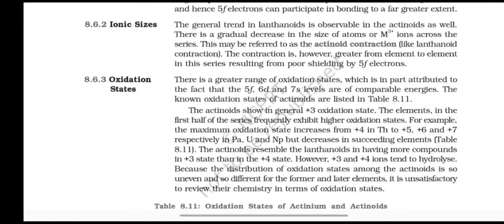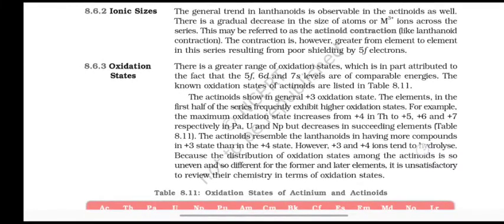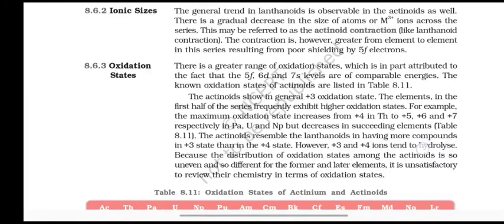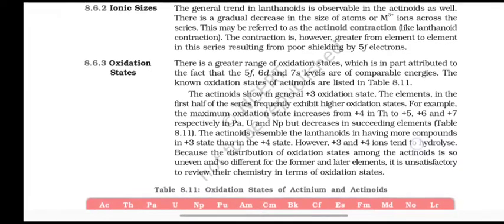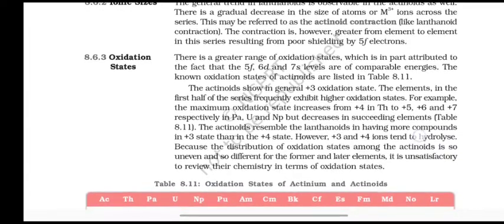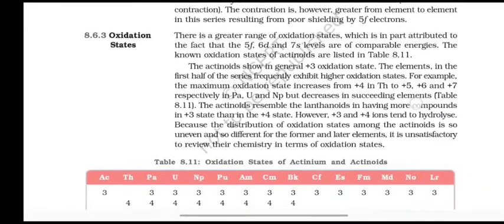Ionic sizes. The general trend in lanthanoids is observable in the actinoids as well. There is a gradual decrease in the size of atoms and 3+ ions across the series. This may be referred to as actinoid contraction. The contraction is, however, greater from element to element in this series, resulting from poor shielding by 5f electrons.